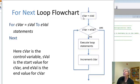So what Visual Basic does is it first sets the control variable to be the starting value. And then we check to see if the control variable is bigger than the ending value. If it's not, we do the loop statements, increment the control variable, meaning add 1 to it.